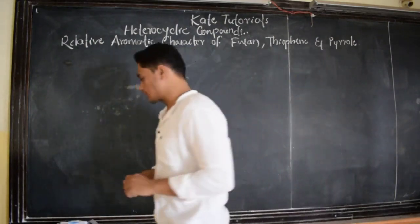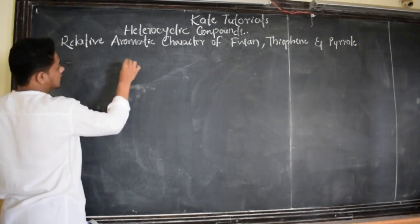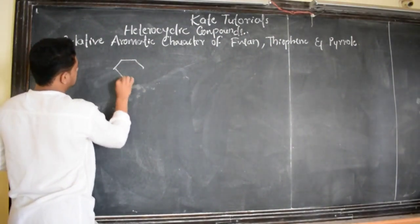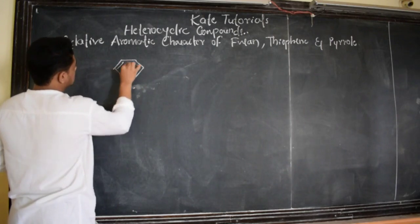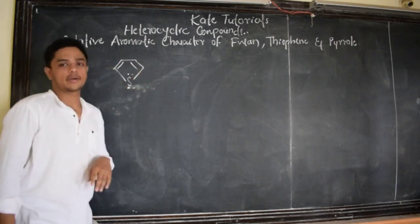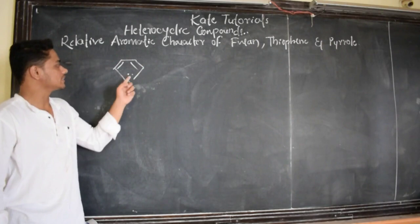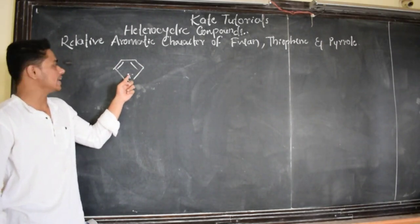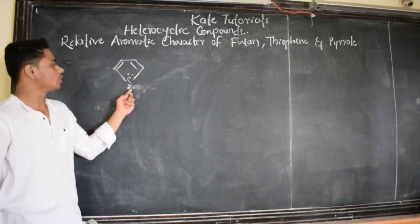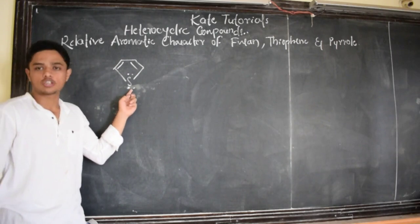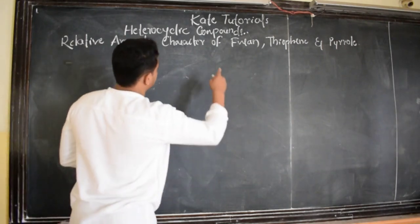We have discussed the structure. Let me draw the structure of thiophene first. Here, sulfur is sp2-hybridized. These carbons are also sp2-hybridized, and the two lone pair electrons on sulfur are in an unhybridized p-orbital which are involved in resonance. The sp2-hybridized electrons are not going to be involved in resonance. This is the structure of thiophene.